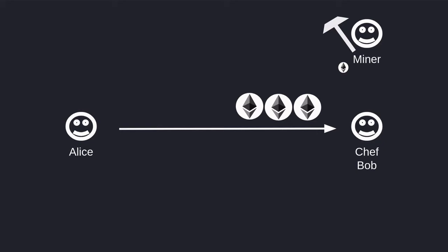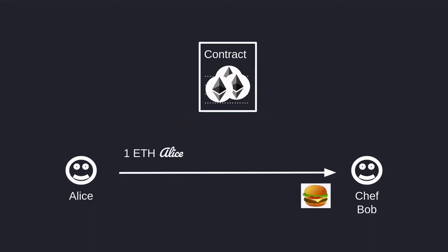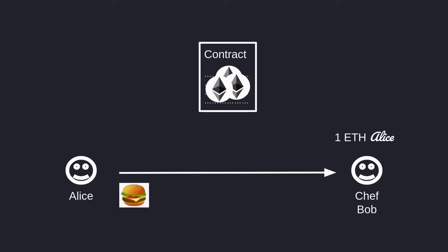So how would we achieve this using a smart contract? A payment channel is a smart contract where Alice will be able to send Ether to Chef Bob multiple times, and this will be done off-chain. Bob can finalize the payment by sending a single transaction to the smart contract and claiming all of the Ether that Alice has agreed to pay. First, Alice deploys a smart contract, sending all of the Ether she wants to lock — in this example, three Ethers. Next, Alice orders her hamburger and promises Bob she'll pay one Ether by signing a message that says Bob can spend one Ether from the smart contract. Alice sends the signature to Bob, and Bob sends the hamburger. This is done off-chain, so there is no on-chain transaction involved.